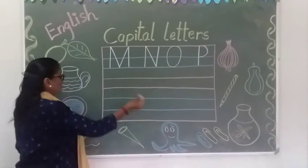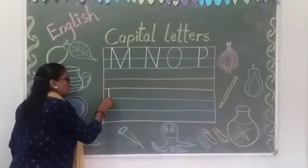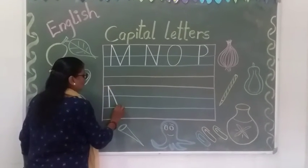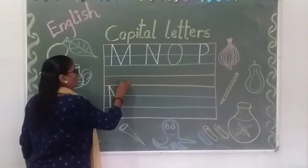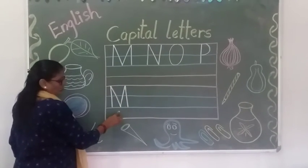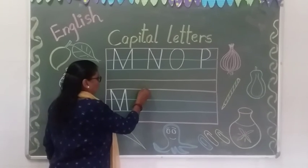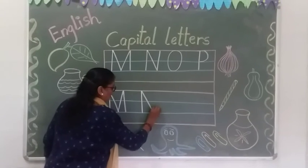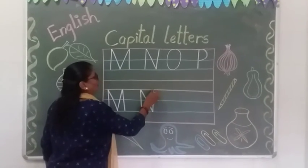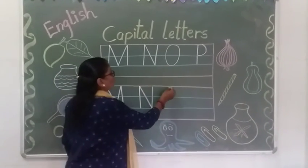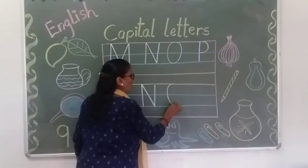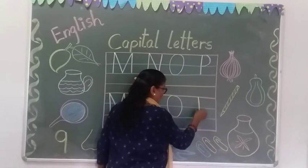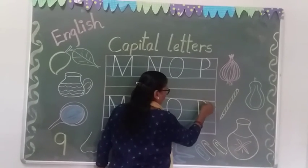So once again, see kids — first red line to second blue line, one standing line, up to down, down to up, then one standing line. M for monkey. Then standing line, slanting line, and standing line, down to up. N for nose. O for owl. And the last letter is P for peacock.